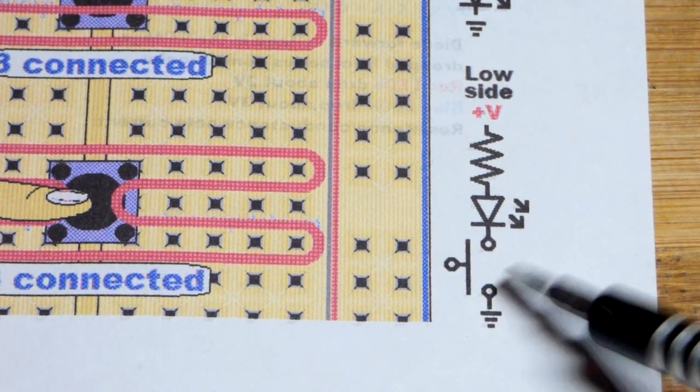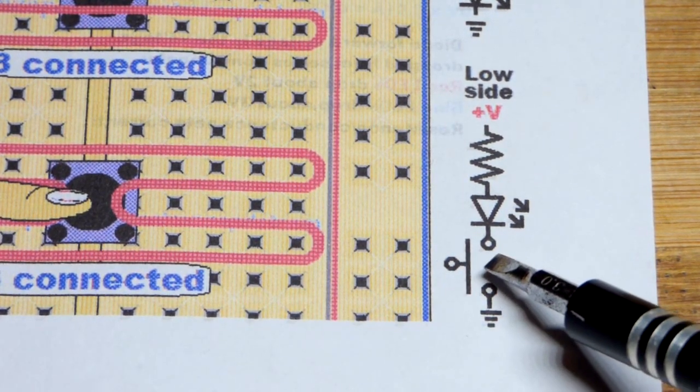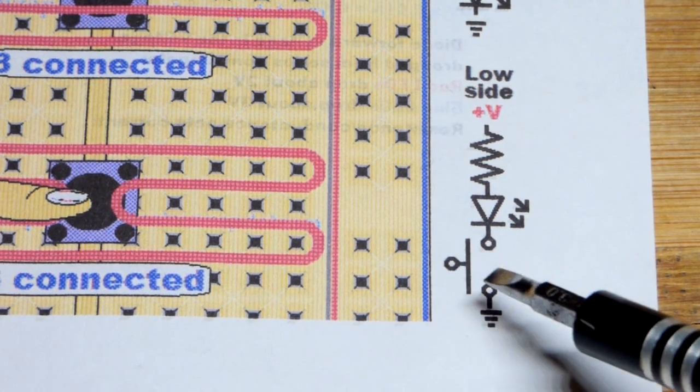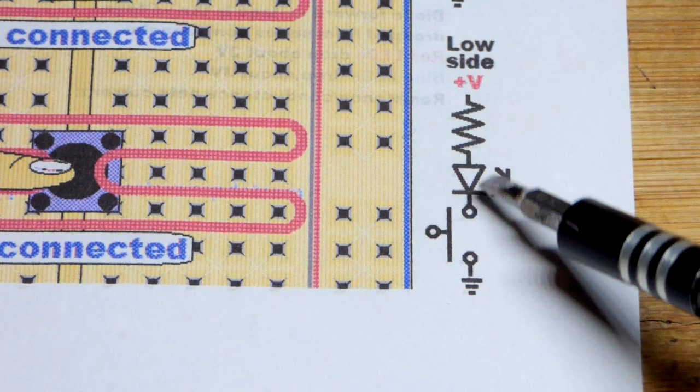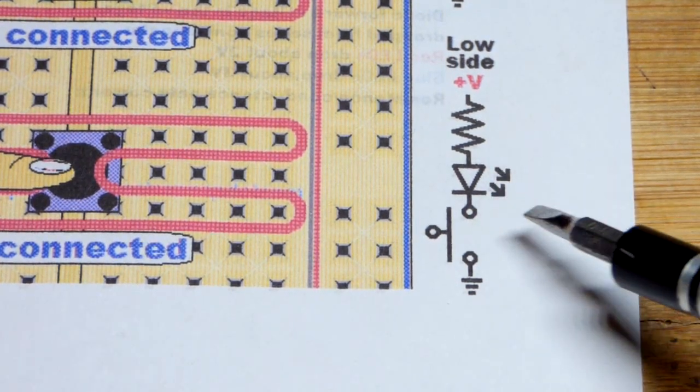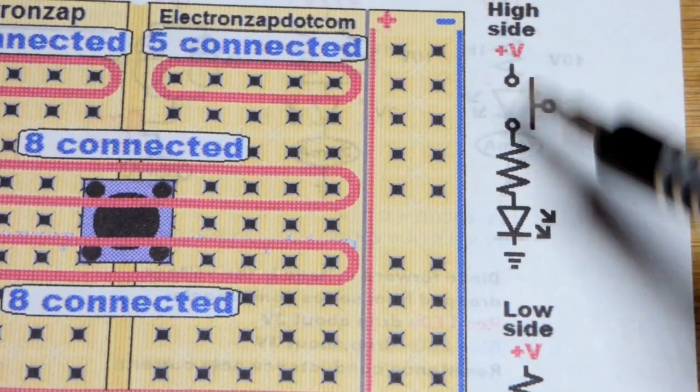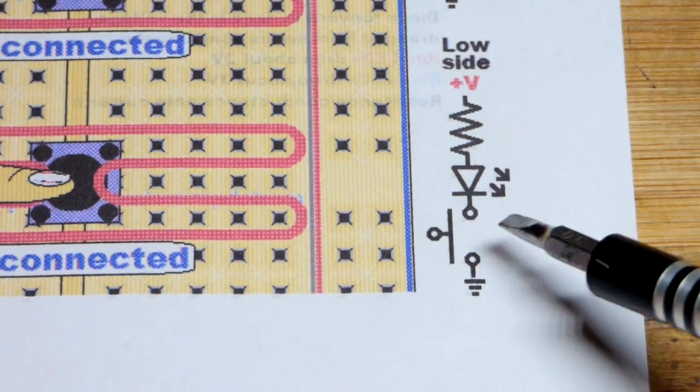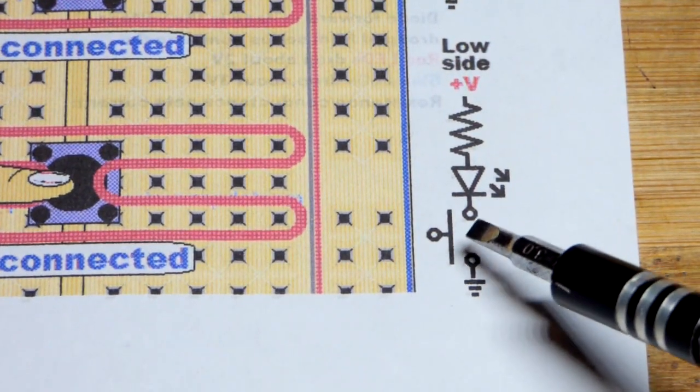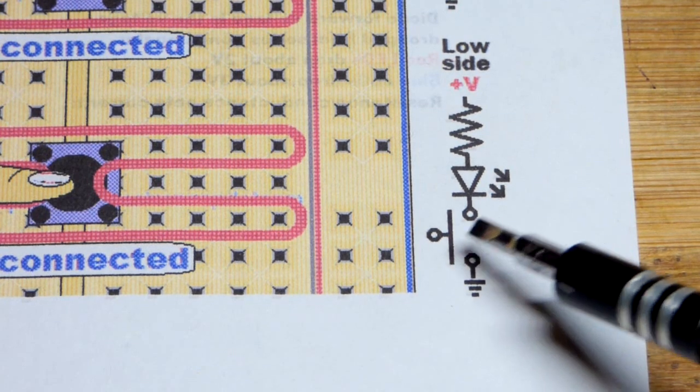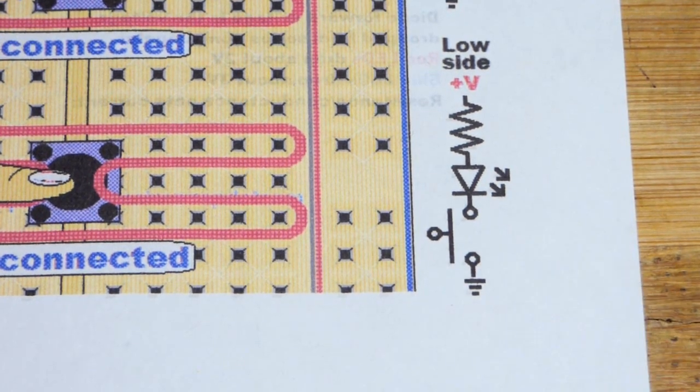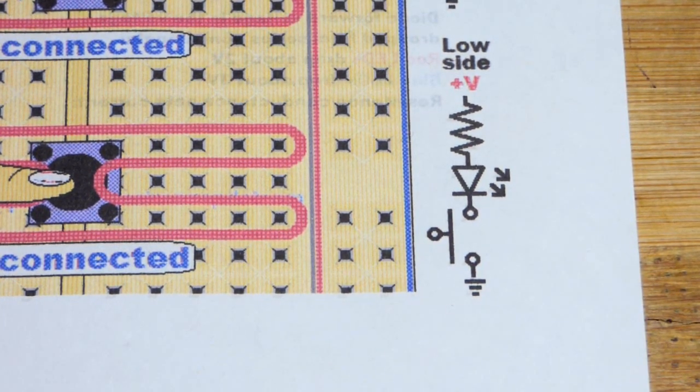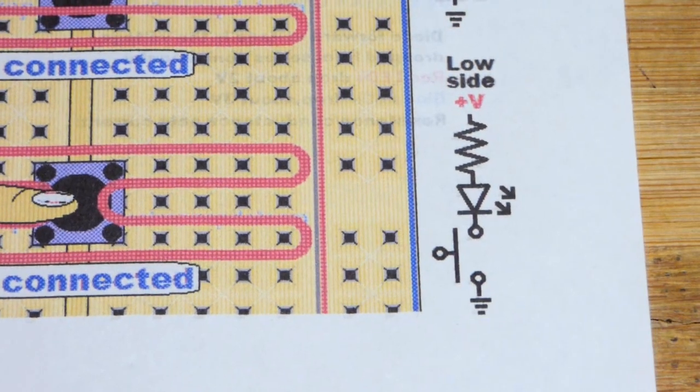Electrically, it's the same. Current only conducts when the switch is closed, and it doesn't conduct when the switch is open, whether it's on the high side or the low side. But a lot of people may not like the way this looks because they're used to just seeing this. There's also transistors that work as switches on the low side. So there's a number of reasons why you may see a switch on the low side. So be aware of that. The order does not matter electrically.